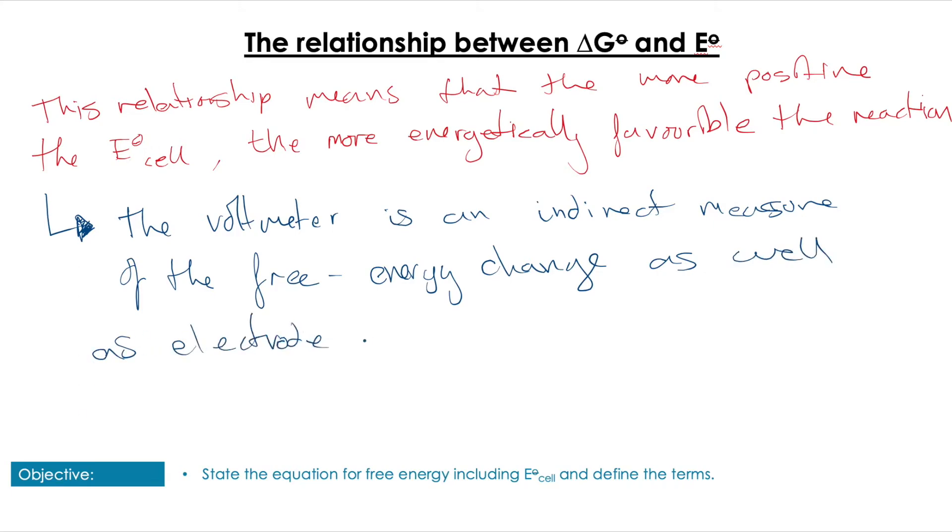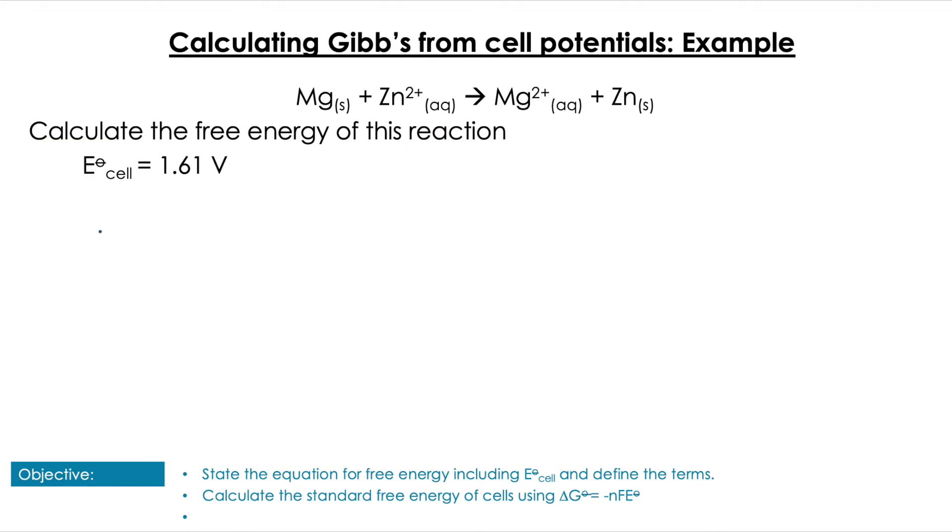A question might look something like this: we have a reaction and we want to calculate the free energy. Using the equation we just looked at, we know we're going to need Faraday's constant, which is 96,500 coulombs per mole. Then using that equation ΔG° = -nFE°, the only thing we have left is the number of moles. We can see in this equation that we have two moles of electrons being transferred.